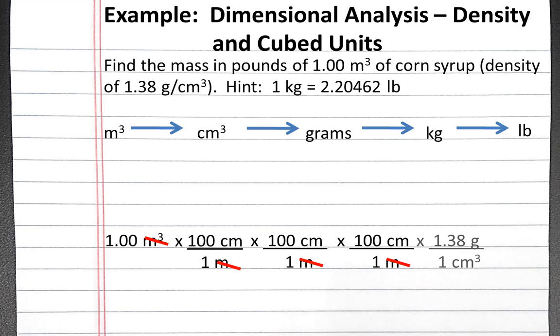Now we can convert from centimeters cubed to grams using the density. We only need to use the density once because the density already has units of centimeters cubed, which will cancel our centimeters cubed on top.